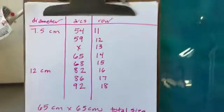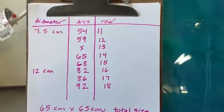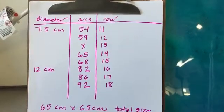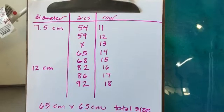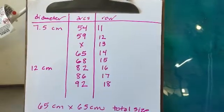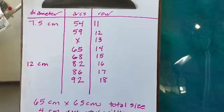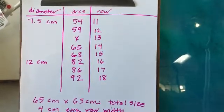So here is the information I have provided for you to solve this problem. At 7.5 centimeters there were 55 arcs and that was row 11, and then you can see 59 arcs in row 12.